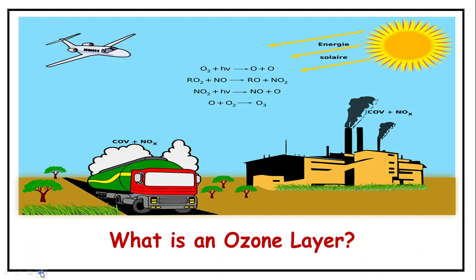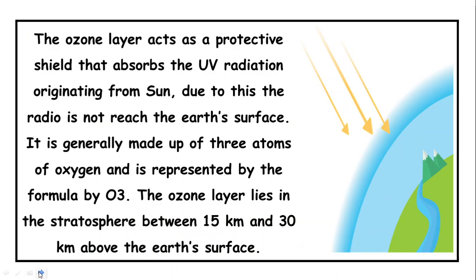Let's see what exactly the ozone layer is. The ozone layer acts as a protective shield that absorbs UV radiation originating from the Sun, preventing radioactive waves from reaching the Earth's surface. It is generally made up of three atoms of oxygen and is represented by the formula O3. The ozone layer lies in the stratosphere between 15 km and 30 km above the Earth's surface.